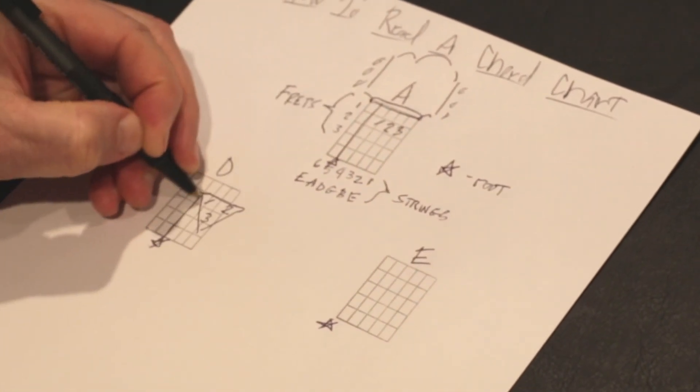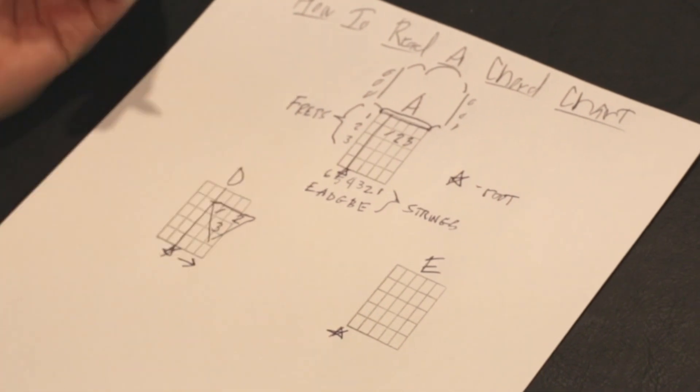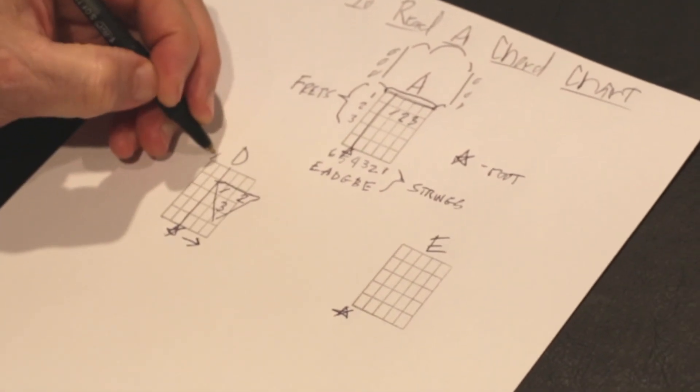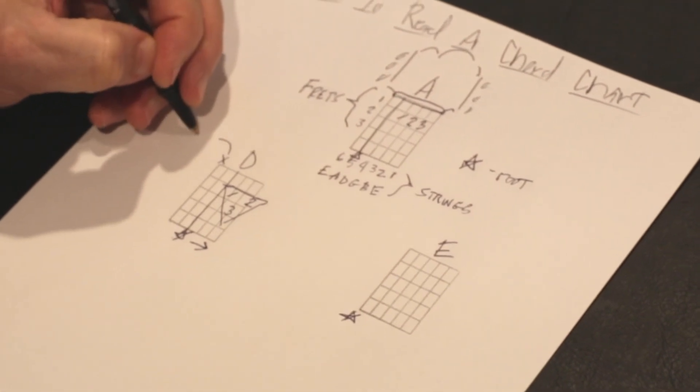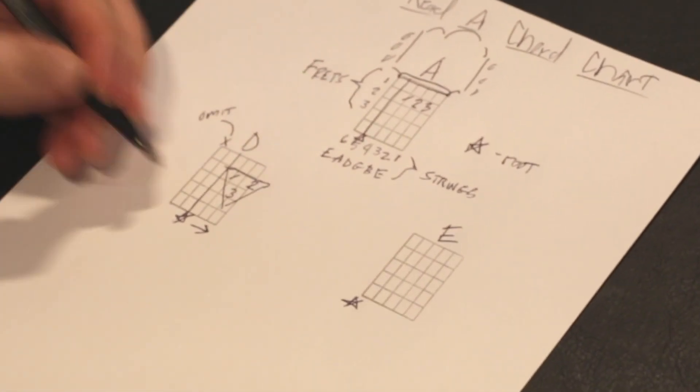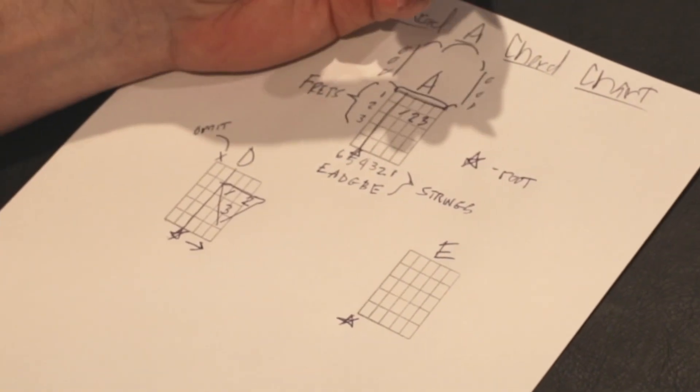This is the D string. You strum this direction here. If you strum up here on this low E, it's going to sound bad. That's why I put an X right there. So you want to omit this string right here. Don't play that low E right there.